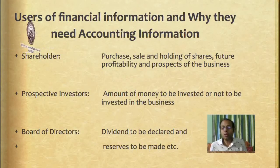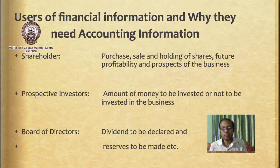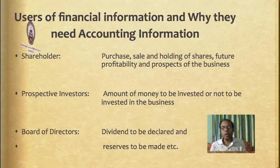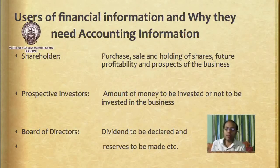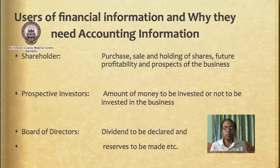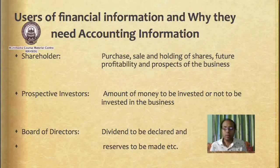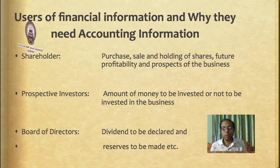In the case of a joint stock company, let us see who the stakeholders are — the interested parties in the business — and why they need accounting information. The accounting information is generated by the accounting system and presented to users in the form of various financial statements. The first and foremost users are the shareholders, who are the owners of the business. They want to know the financial position and future prospects of the business, and they take decisions on whether to hold or sell shares based on information generated by accounting.